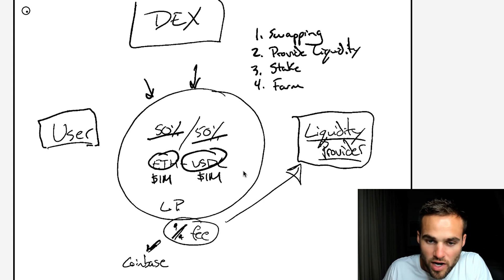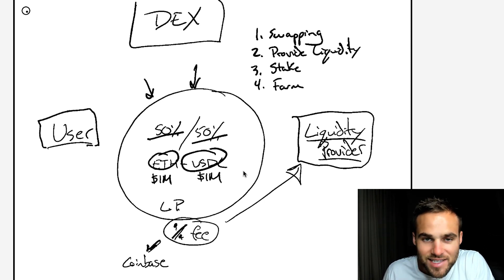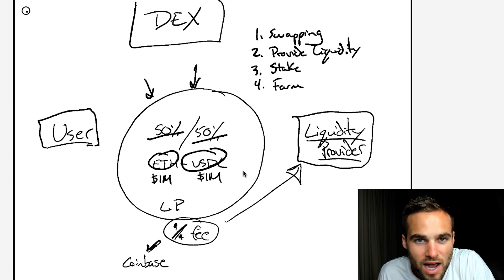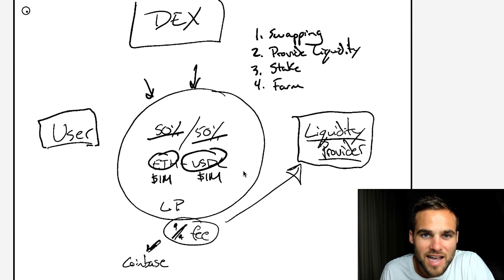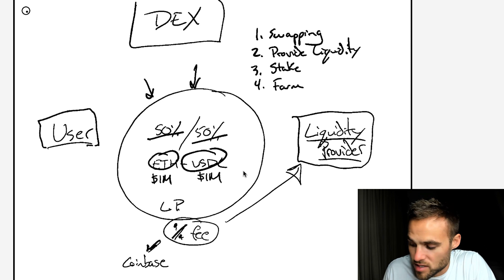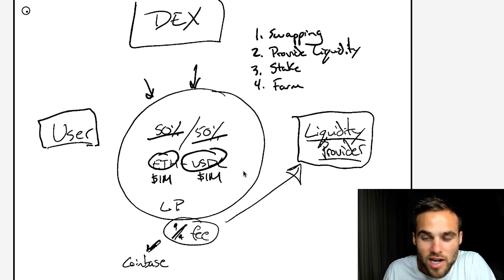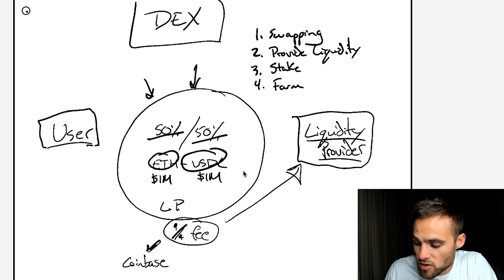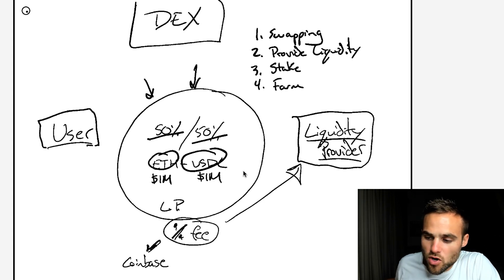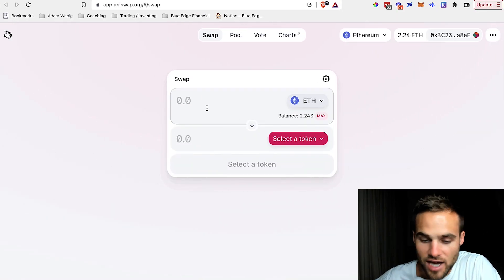Each DEX really looks the same. Once you see how it works on one ecosystem, they look pretty much exactly the same on any other ecosystem. There's usually a swapping feature — like a trading feature — a place to provide liquidity, a place to stake, and a place to farm. Let's take a look at this and I'll show you how to actually do these different actions.